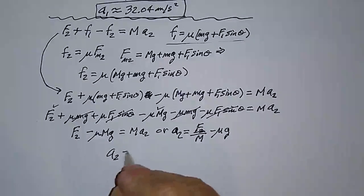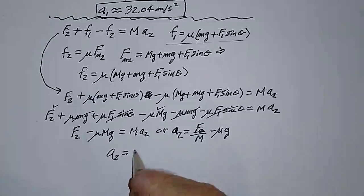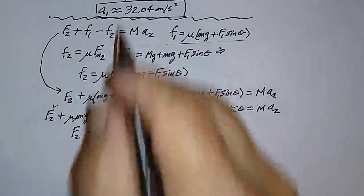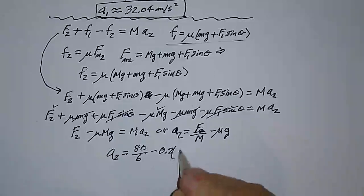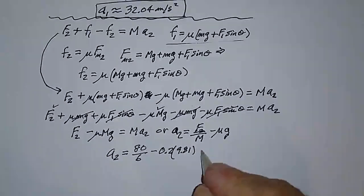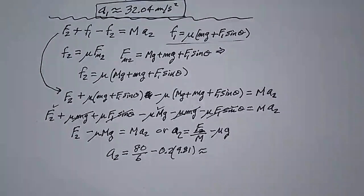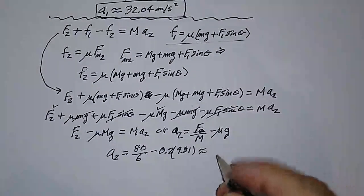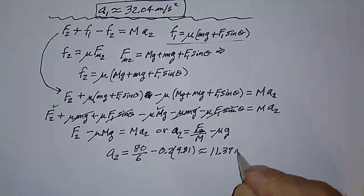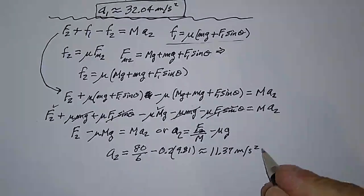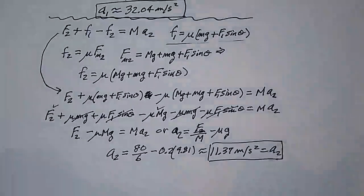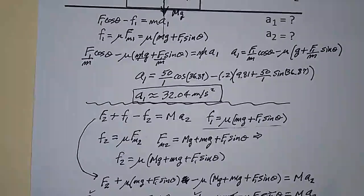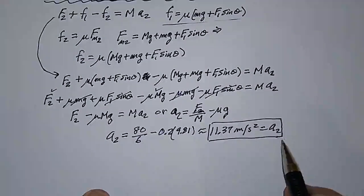Plugging in the numbers: a2 = 80/6 − 0.2 × 9.81 = 11.37 meters per second squared. So the two answers are: a1 = 32.04 m/s² for the top block, and a2 = 11.37 m/s² for the bottom block.